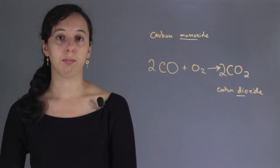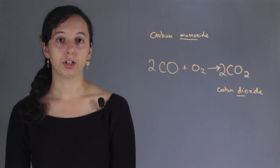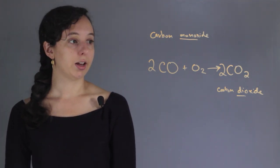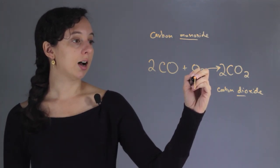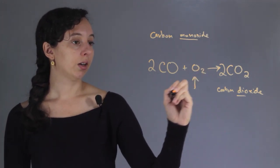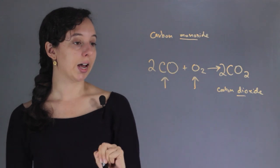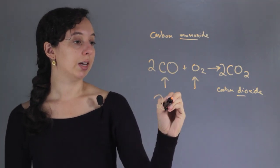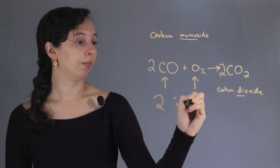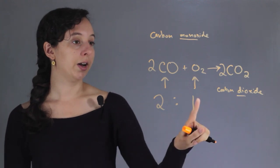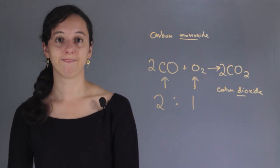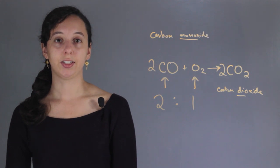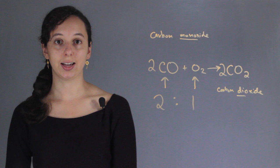So we're completely balanced. So the original question was: what is the air-to-fuel ratio? In this case, our air is oxygen and our fuel is carbon monoxide. So the ratio is two to one — air is one, carbon monoxide is two. I'm Robin Higgins, and this is what is the ratio of combustion for carbon monoxide.